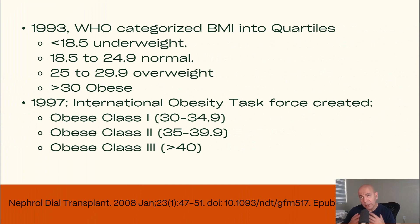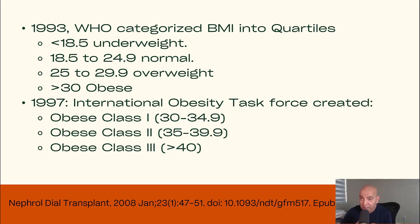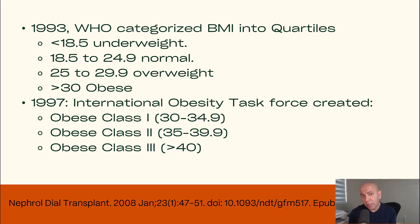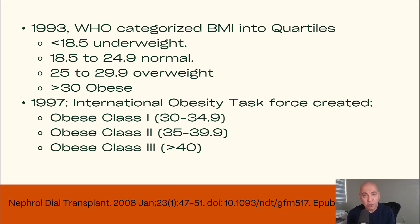In 1993, things got more complex because the World Health Organization said BMI is a simple way to categorize who is underweight, normal weight, overweight, or obese. They established that under 18.5 is underweight, 18.5 to 24.9 is normal weight, 25 to 29.9 is overweight, and greater than 30 is obese.